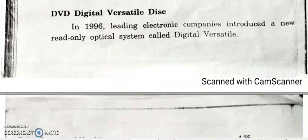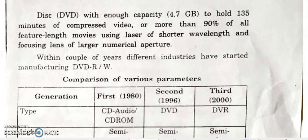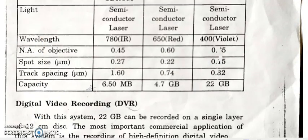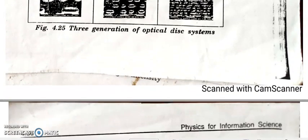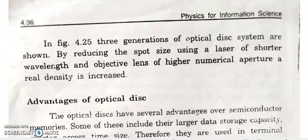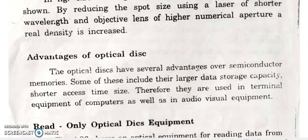Next is DVD. Compared to CD, the capacity of a DVD is very high — that is the main difference. The writing and reading phenomenon is the same. The major difference is only the capacity. The main advantage of optical disk is that compared to semiconductor memory, we can store large amounts of data.